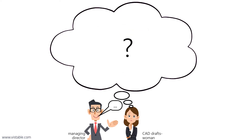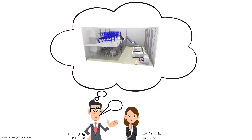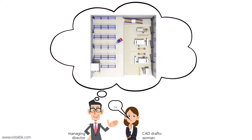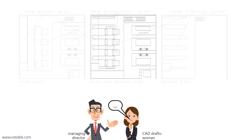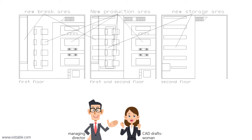It is very difficult for the CAD draftswoman to really understand the ideas of the manager. Finally, the trial-and-error method returns a result, but both require a lot of time — more than previously thought. The CAD draftswoman is very satisfied with the plan, but the manager is not really satisfied because, in his opinion, the 2D plan is too abstract and does not really match the ideas he has in his head. He hopes his employees will perhaps be able to understand and interpret the plan better than he could himself.